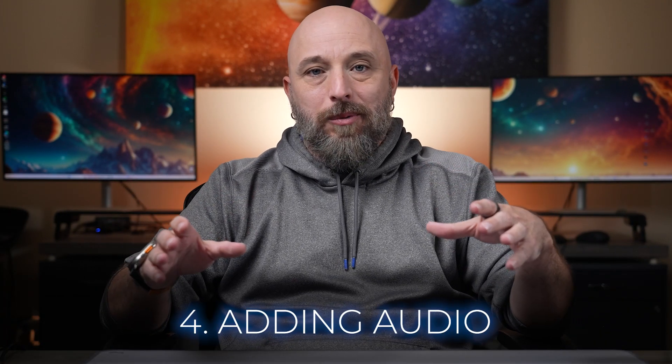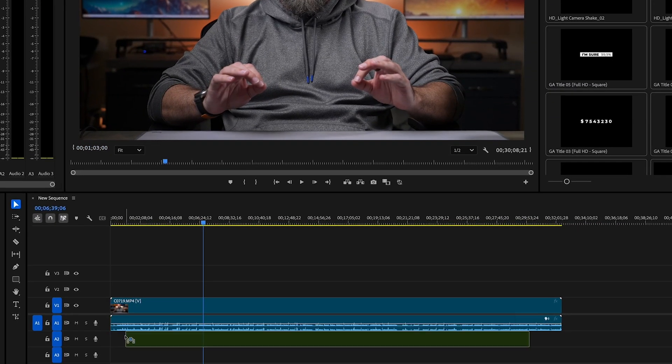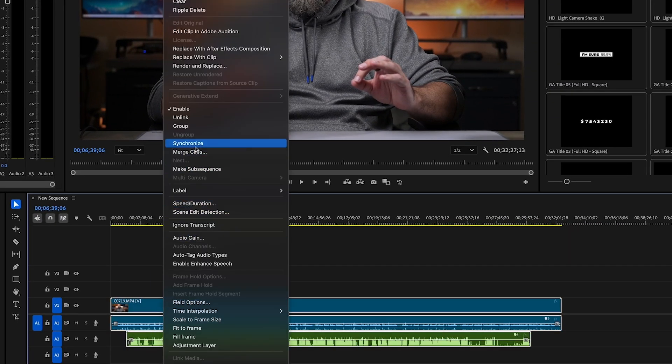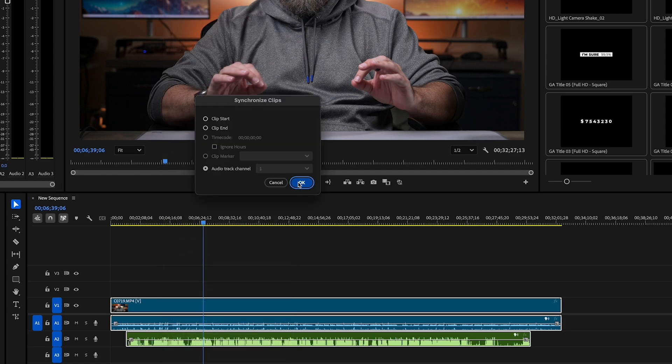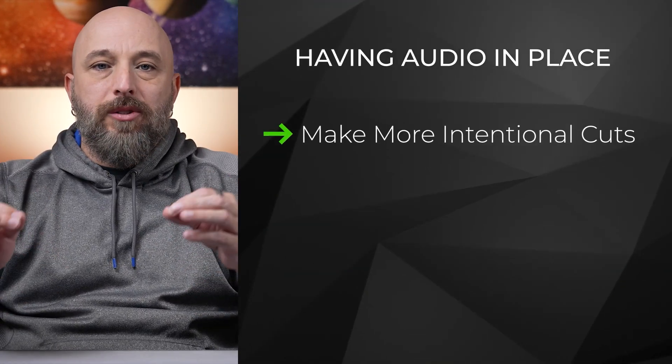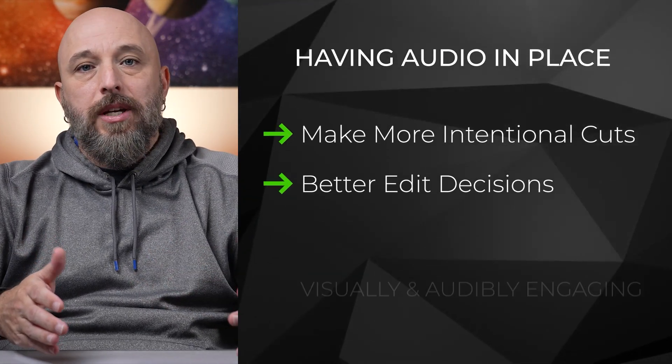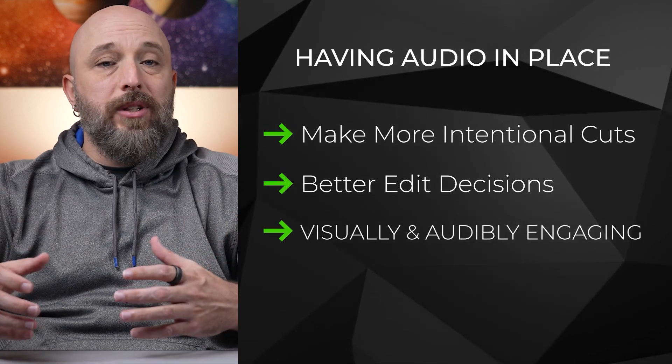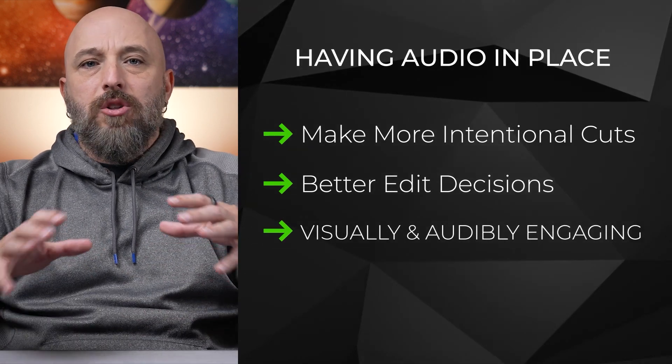Number four: adding audio. We're going to bring in our audio before we even start editing so everything stays synced. Drag your audio file — whether it's your voiceover or some background music — right onto the timeline below your video clips. This sets the mood and makes sure everything flows smoothly. Adding audio early in your edit helps set the rhythm and flow of your video. Whether it's background music or dialogue, having the audio in place helps you make more intentional cuts and edit decisions, ensuring the final piece is both visually and audibly engaging.